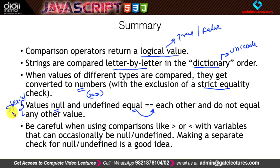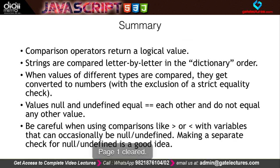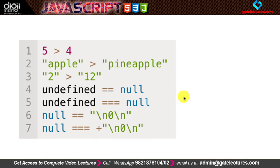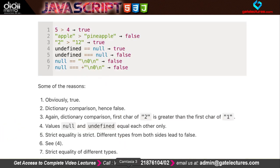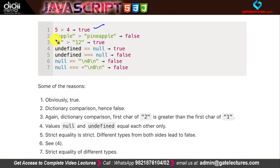Now let us look at some practice examples. For 5 > 4, the result is true because we check numerical values. For 'pineapple' > 'apple' — both are strings, so we compare character by character. The first character 'p' has a higher Unicode value than 'a', so 'pineapple' > 'apple' is false — wait, pineapple should be greater than apple, so the result is actually false that apple is greater.